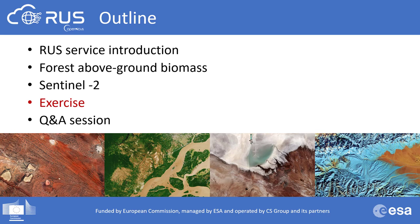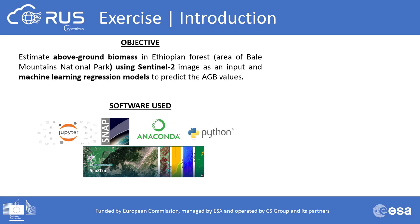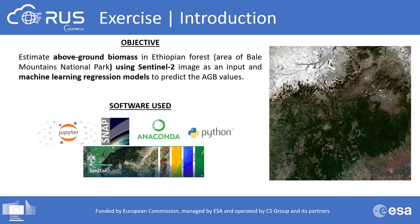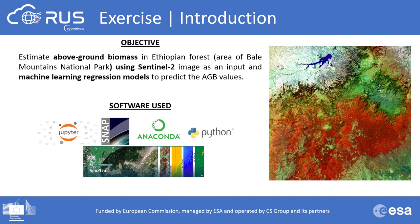The objective of this exercise is to estimate above-ground biomass in Ethiopian forest in the area of Bale Mountains National Park, using a Sentinel-2 image as input and machine learning regression models to predict above-ground biomass values. As reference values we will use the global dataset prepared by ESA Biomass Climate Change Initiative. For processing we will use a Jupyter notebook from Anaconda distribution with Python, the Snappy module based on SNAP software, and the Sen2Cor plugin installed in SNAP for atmospheric correction.